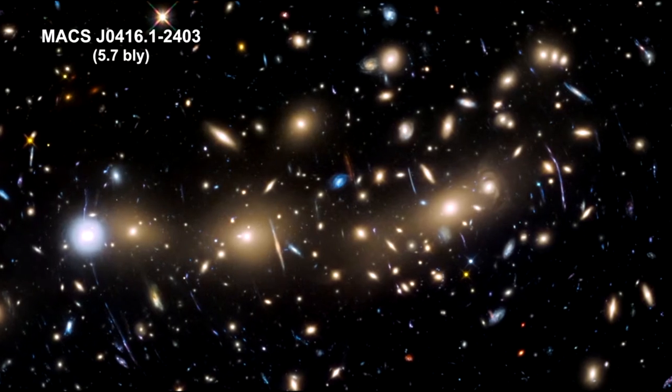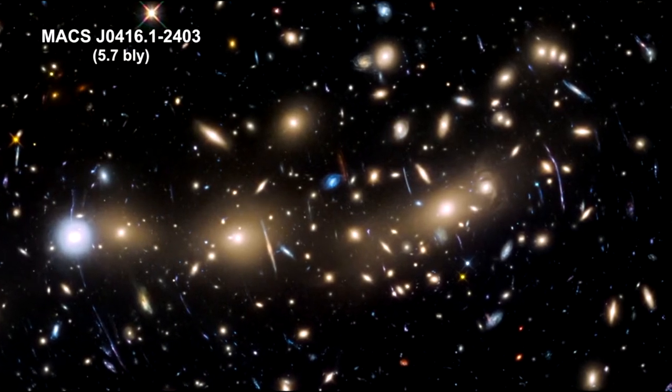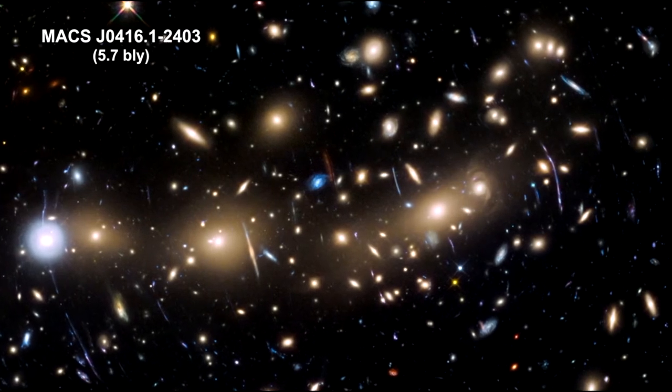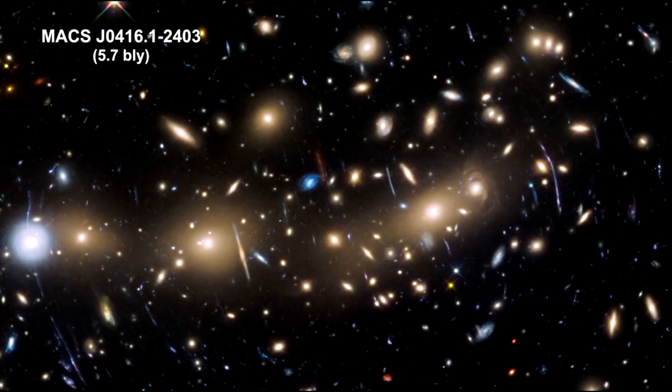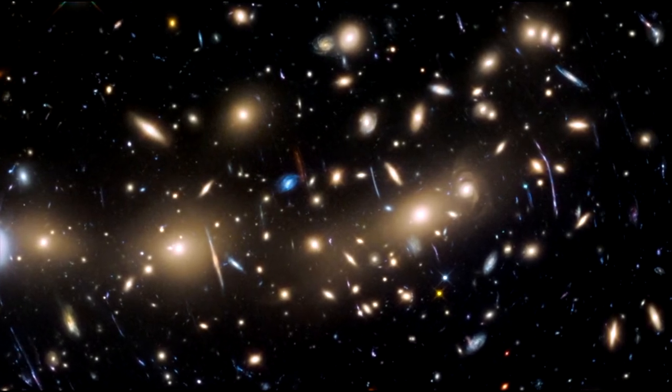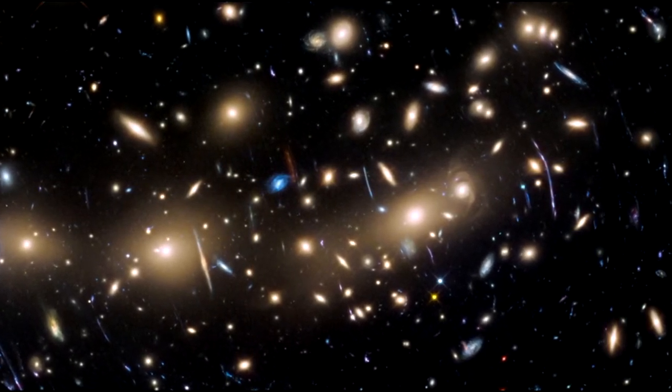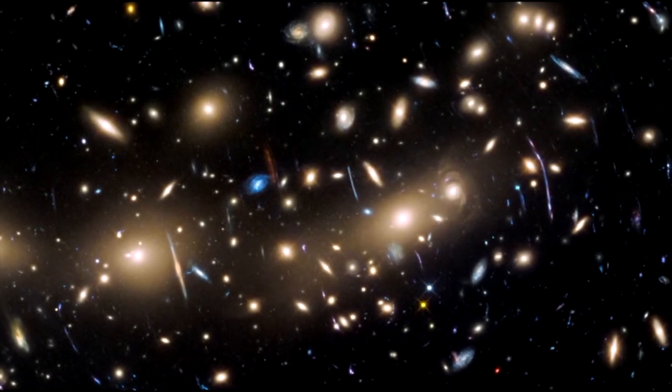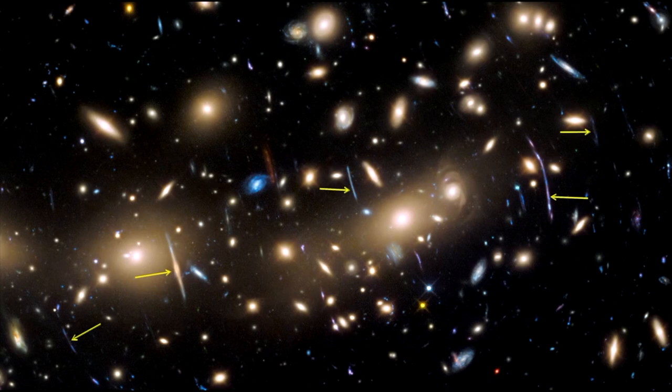And here's another cluster, 5.7 billion light years away. These foreground galaxy clusters are magnifying the light from the faint galaxies that lie far behind the clusters themselves. These faint lensed galaxies are around 12 billion light years away. It's the gravitational lensing that allows us to see that far back in time.